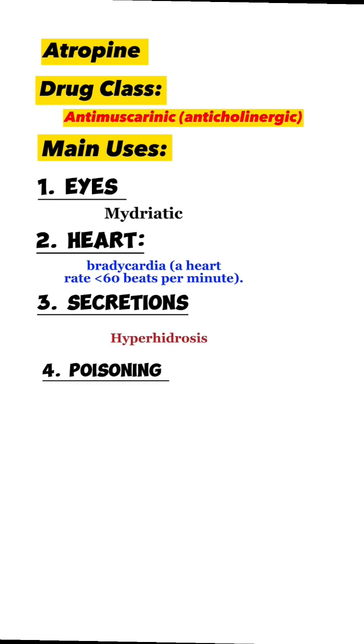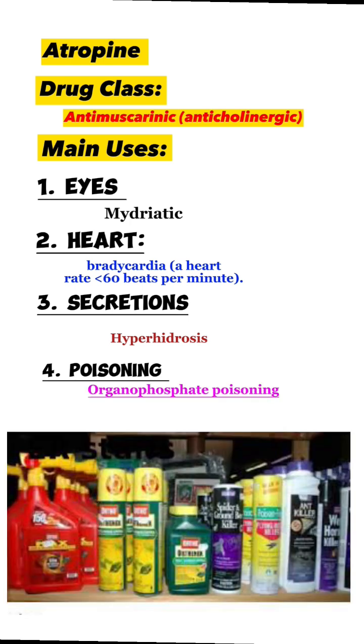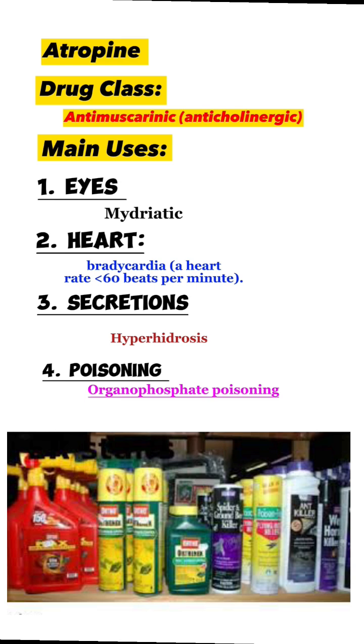The fourth main use of atropine: in poisoning. Atropine is not an actual antidote for organophosphate poisoning; however, it works by blocking the action of acetylcholine at muscarinic receptors.